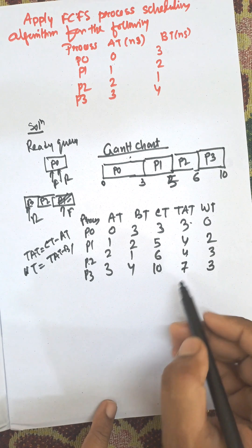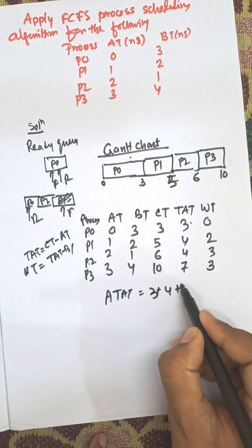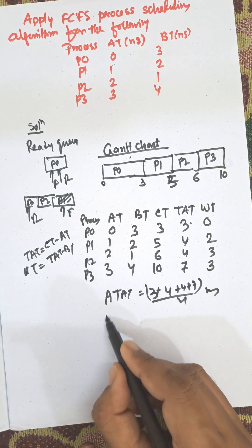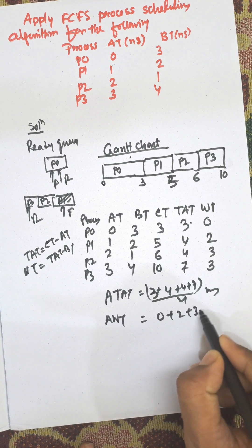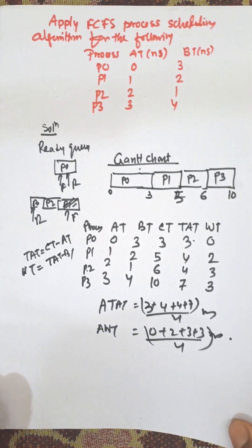Now we need to find the average turnaround time: average TAT equals (3 + 4 + 4 + 7) divided by 4 nanoseconds. Calculate this. And average waiting time equals (0 + 2 + 3 + 3) divided by 4 nanoseconds. Thank you very much for watching this video.